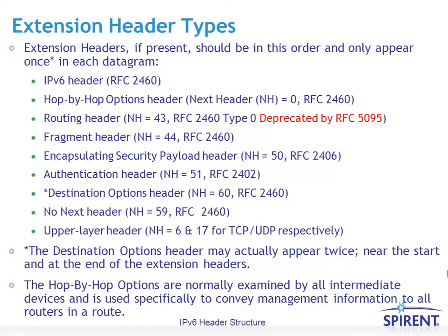There could be a fragment header with next header value of 44 as described in RFC 2460, but a key concept with IPv6 is that only the end devices will fragment packets, whereas with IPv4 the intermediate routers would do the fragmentation. For IPsec, there is the encapsulation security payload header with next header value of 50 and the authentication header with next header value of 51, described in RFC 2406 and RFC 2402 respectively. There could also be a destinations options header with next header value of 60, followed by either no next header — value of 59 — or some upper layer protocol such as TCP (value 6) or UDP (value 17).